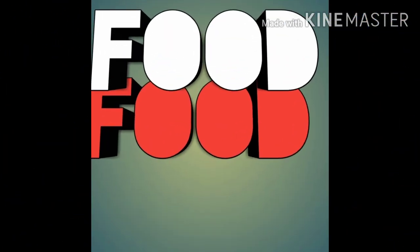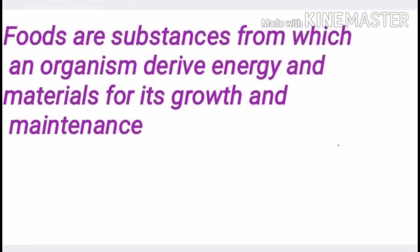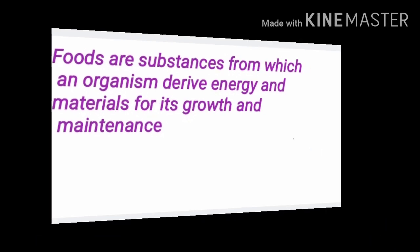First of all, what is food? Every day we are eating something to fulfill or to satisfy our hunger. These things are called food. For example, here is a food which is made by using rice, milk, sugar, and dry fruits. These all materials that we use are called ingredients. So we can define food as a substance from which an organism derives energy and materials for its growth and maintenance.